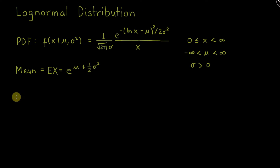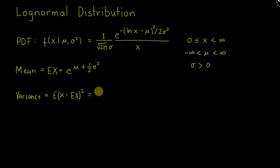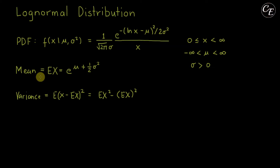Now let's proceed with the derivation of variance. Variance has the formula E[(x minus E[x])²], and equivalently E[x²] minus (E[x])². We will use this second form. Since we already derived E[x], we can use that result. We still need to derive E[x²] before we can compute the variance.